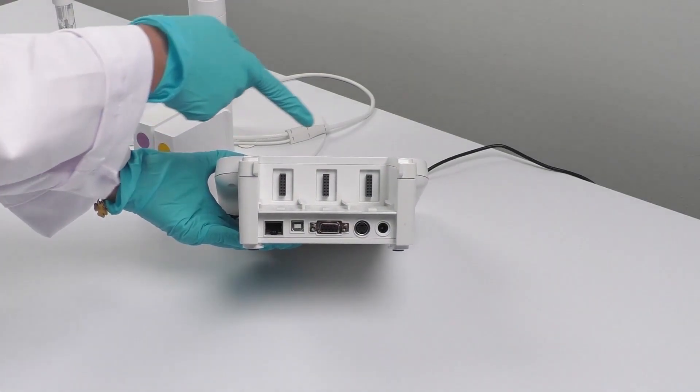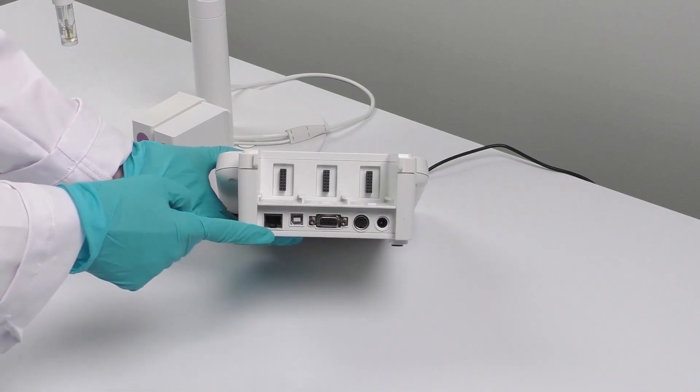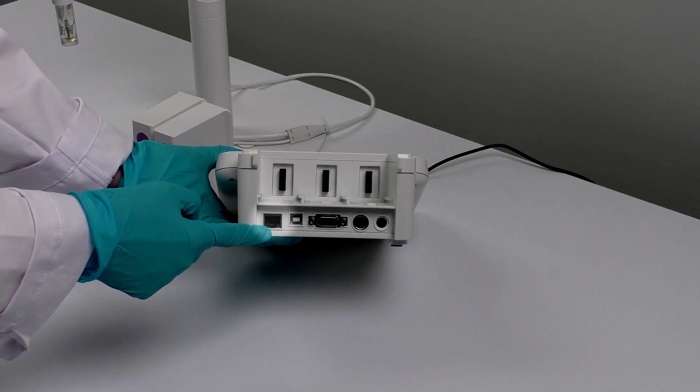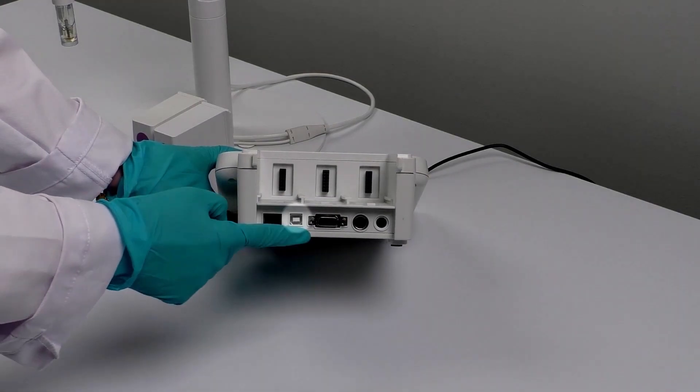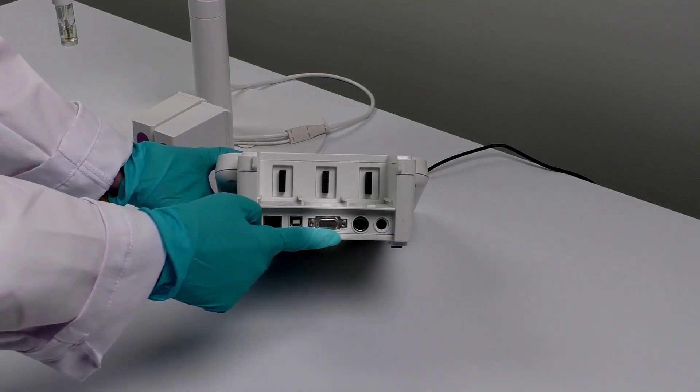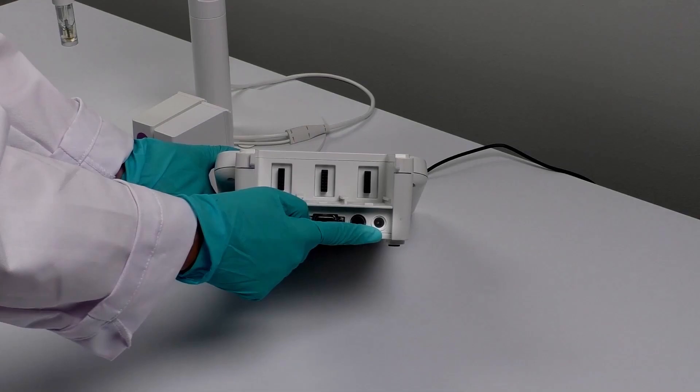At the back, you'll notice three module slots and a port for an Ethernet cable, which allows you to connect to a network printer or LabX. There's also a USB type B port, which can be used to connect to EasyDirect pH or LabX, an RS-232 port to connect to a printer, a mini-DIN to connect a stirrer, and a socket to connect to a power supply.